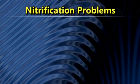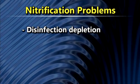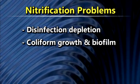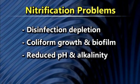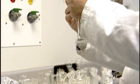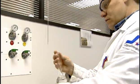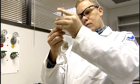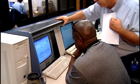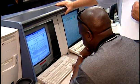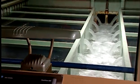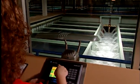Left unchecked, nitrification can lead to disinfection depletion, which can permit the growth of coliforms and other biofilm-related microorganisms, as well as reduced pH, alkalinity, and a decrease of dissolved oxygen. Controlling nitrification involves optimizing the chloramine treatment process and distribution system operation and maintenance to prevent occurrence. This is a difficult but not impossible balancing act for most water providers, and is required in order to meet nationally and regionally legislated regulations and requirements.